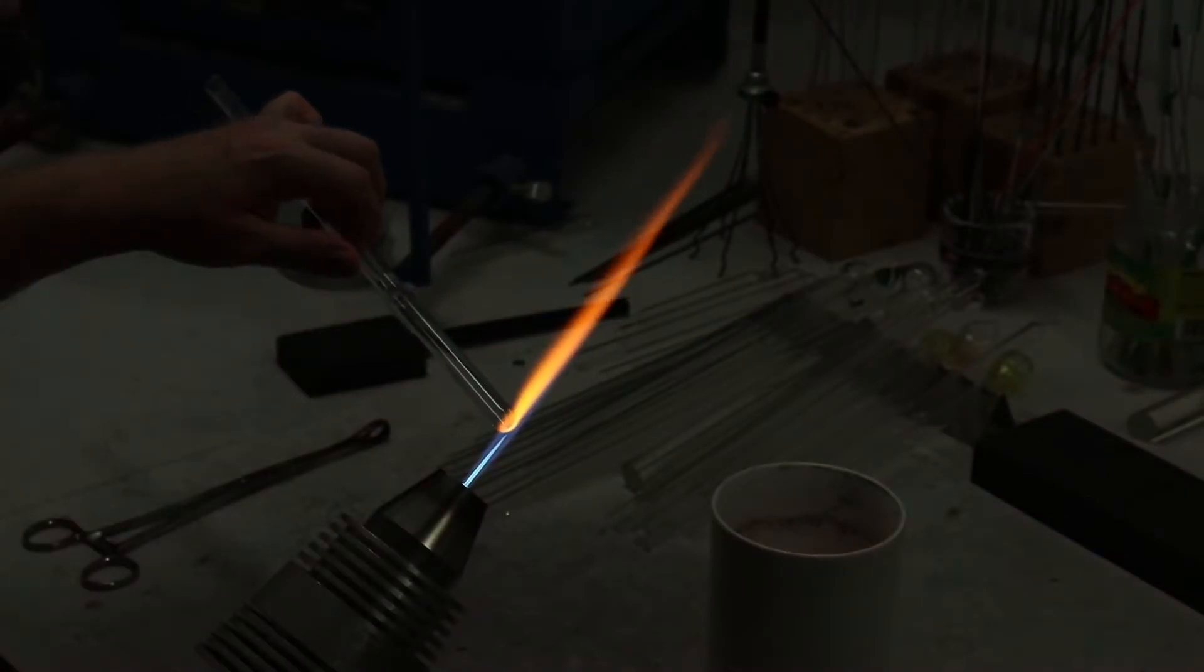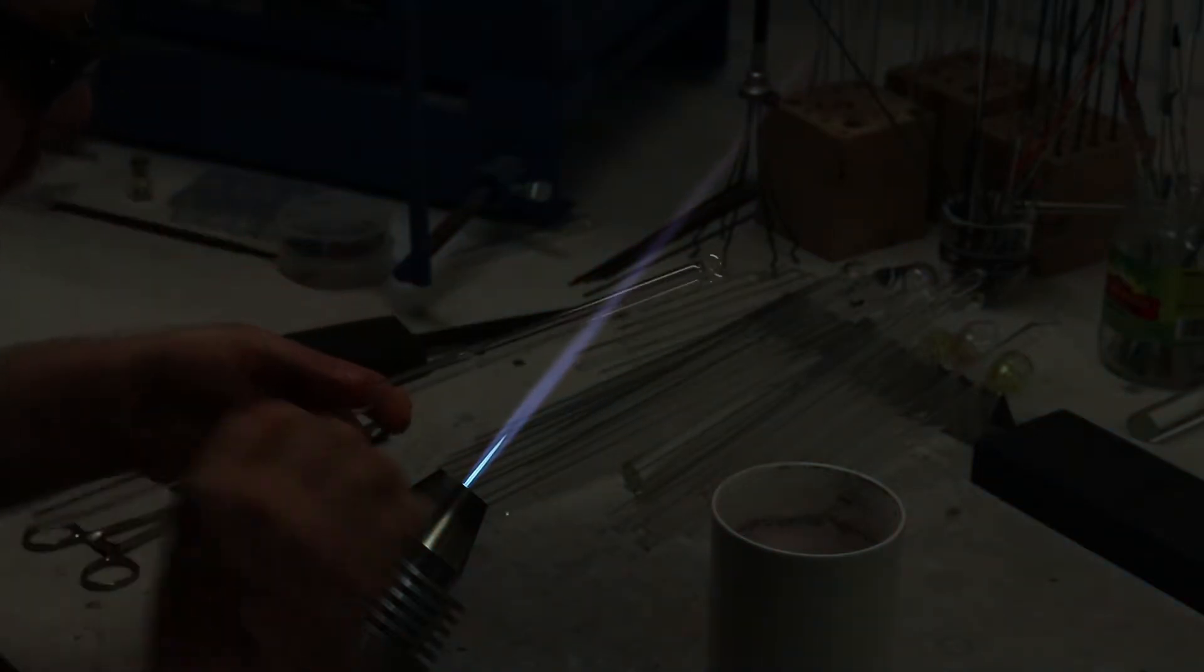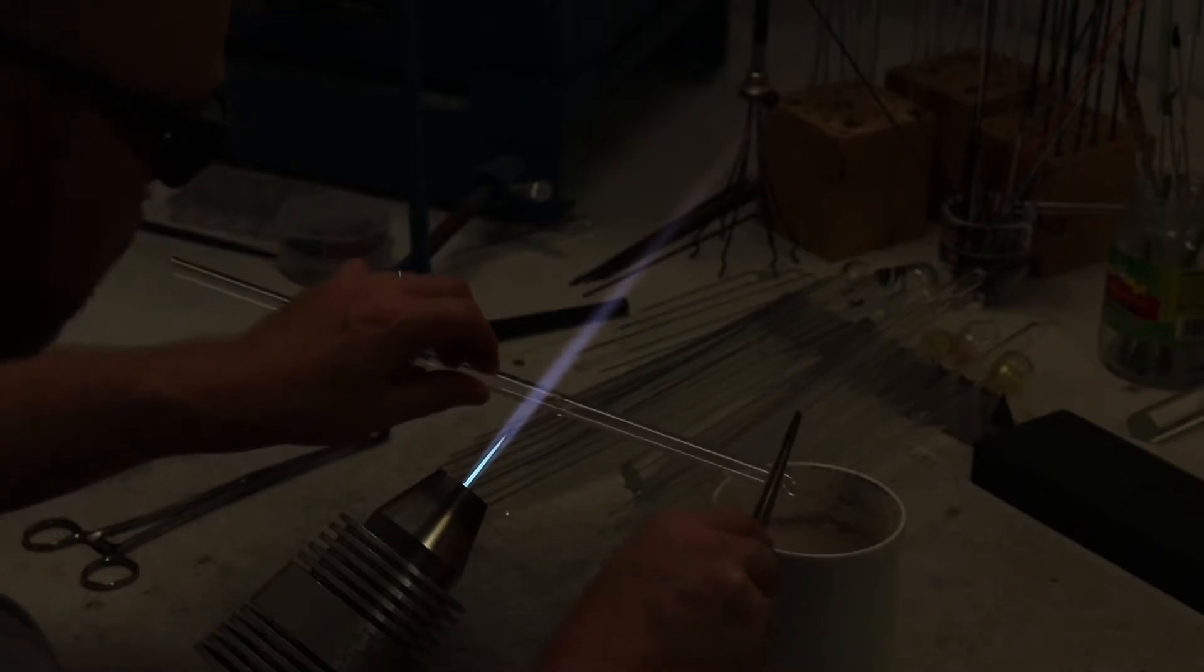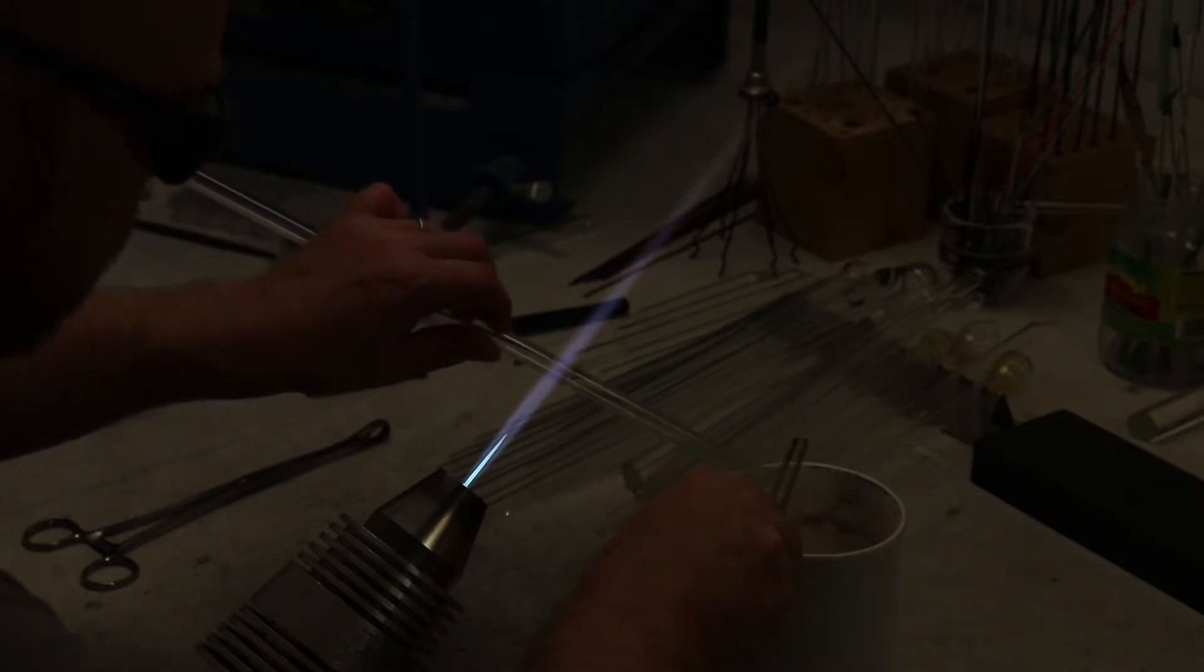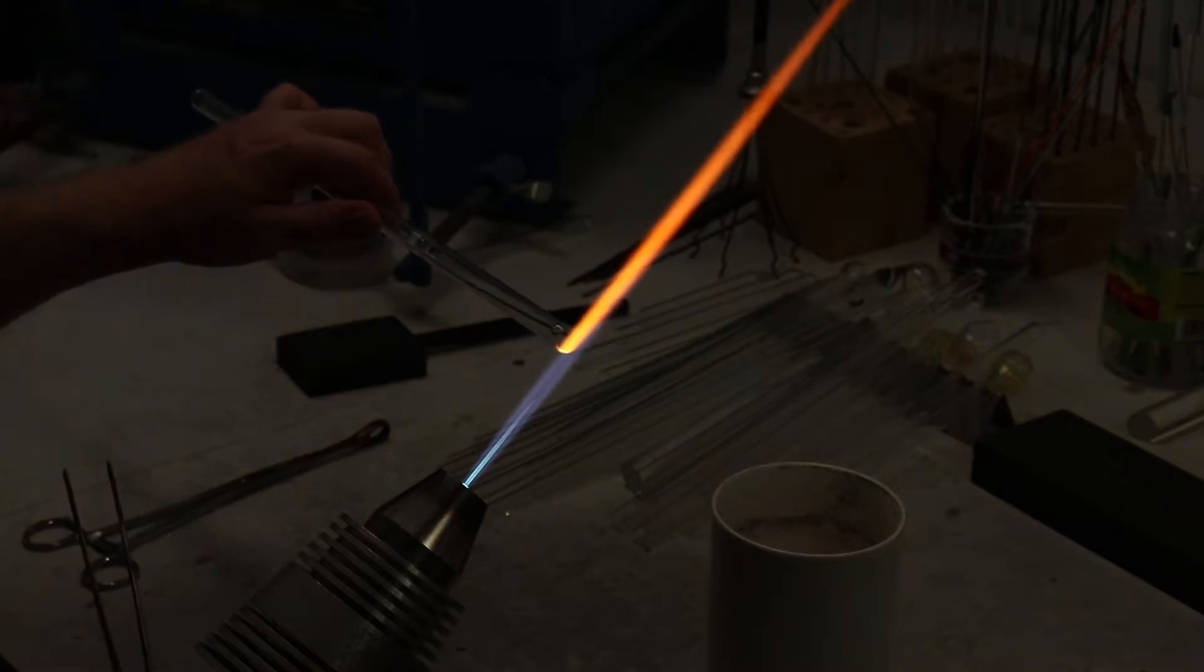This is my least favorite way to open up the glass, but what you're going to do is heat up the front, blow a bubble very thin, and then you're going to knock it off with your tweezers or something else. My problem with this is it's too easy to blow it way too thin and you can get little bits of glass floating around in the air and you do not want to breathe that in.